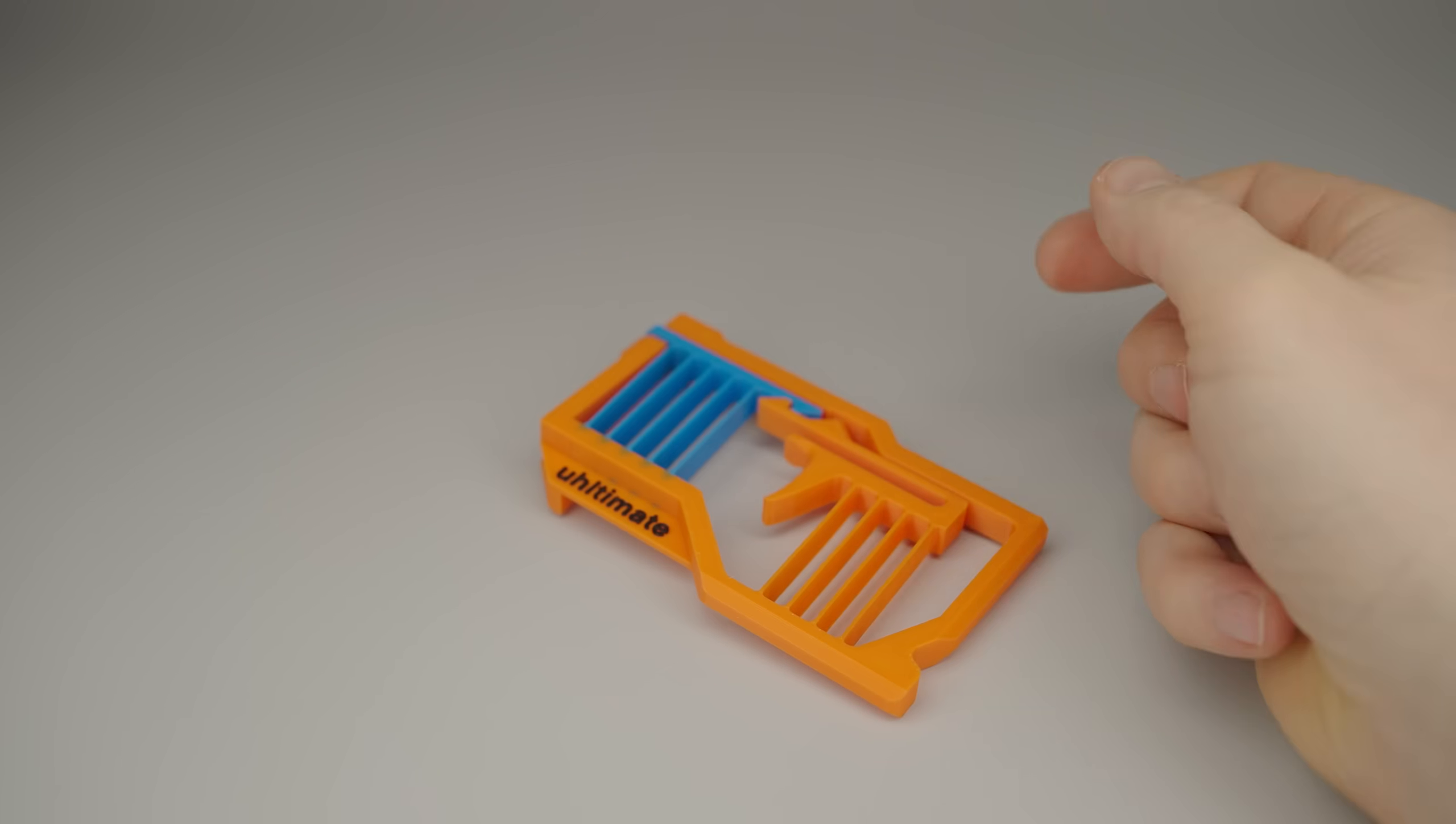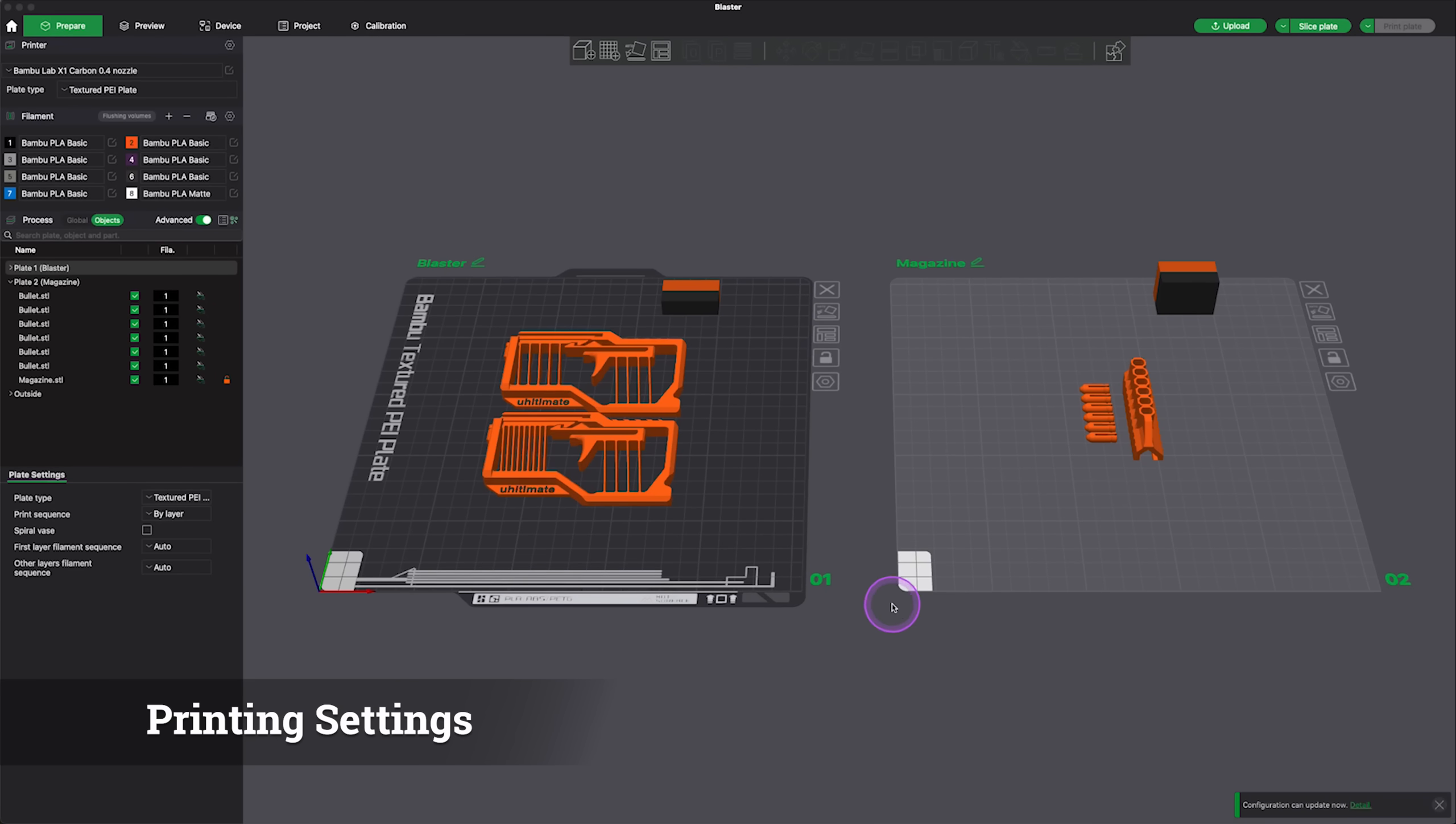Alright, let's build your own blaster. First, you gotta download the 3D print files from Maker World. The link's down in the description.